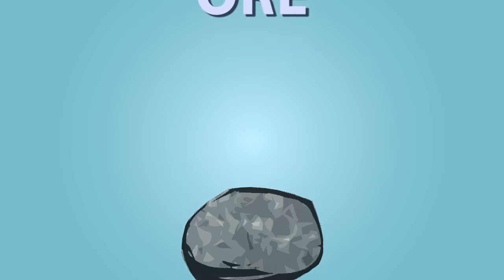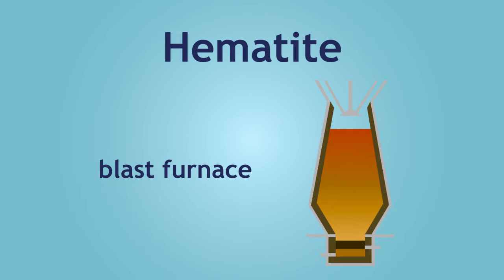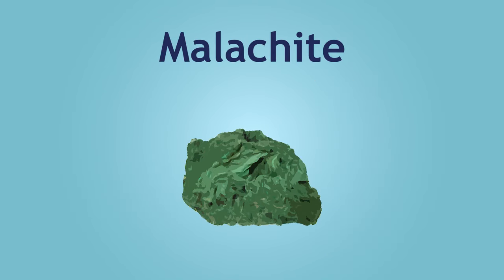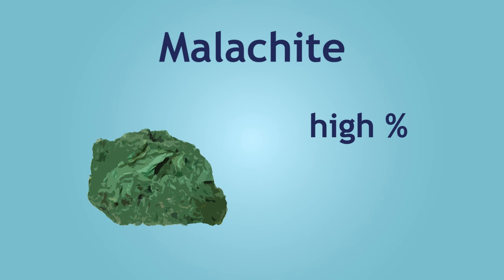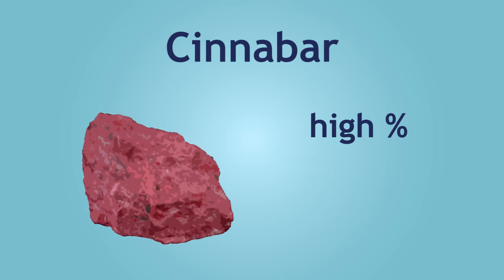For example, hematite contains a high percentage of iron. The extraction of iron from hematite is done in a blast furnace. Malachite contains a high percentage of copper. Cinnabar contains a high percentage of mercury.